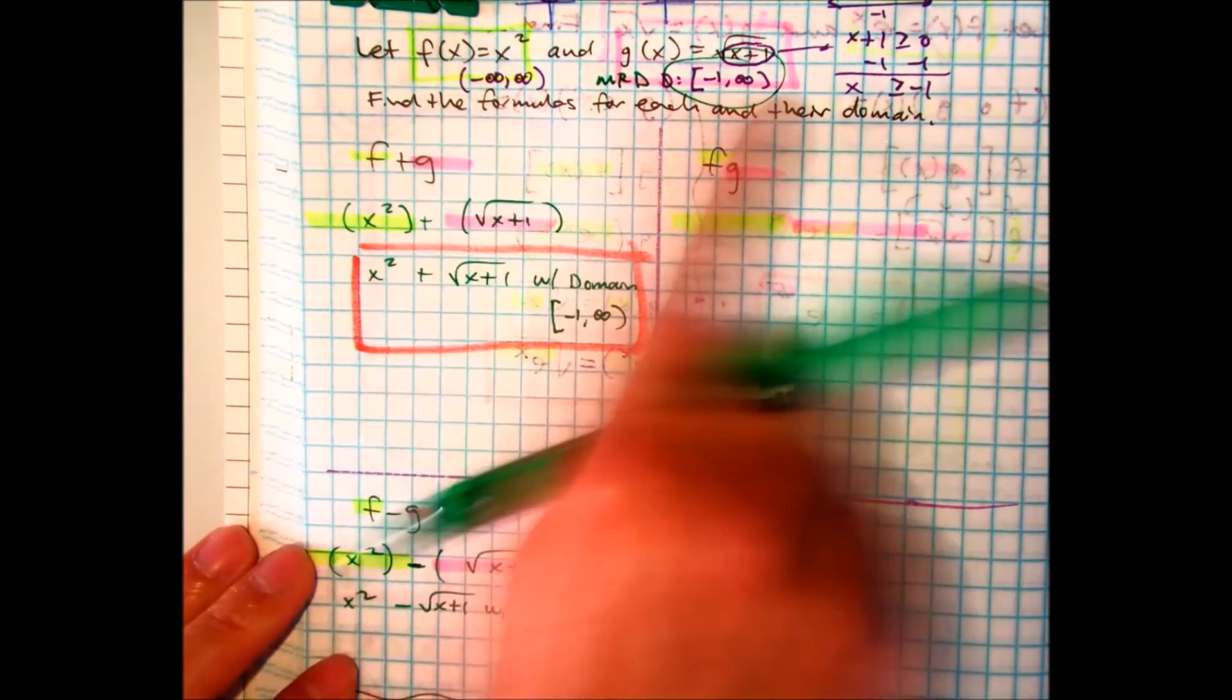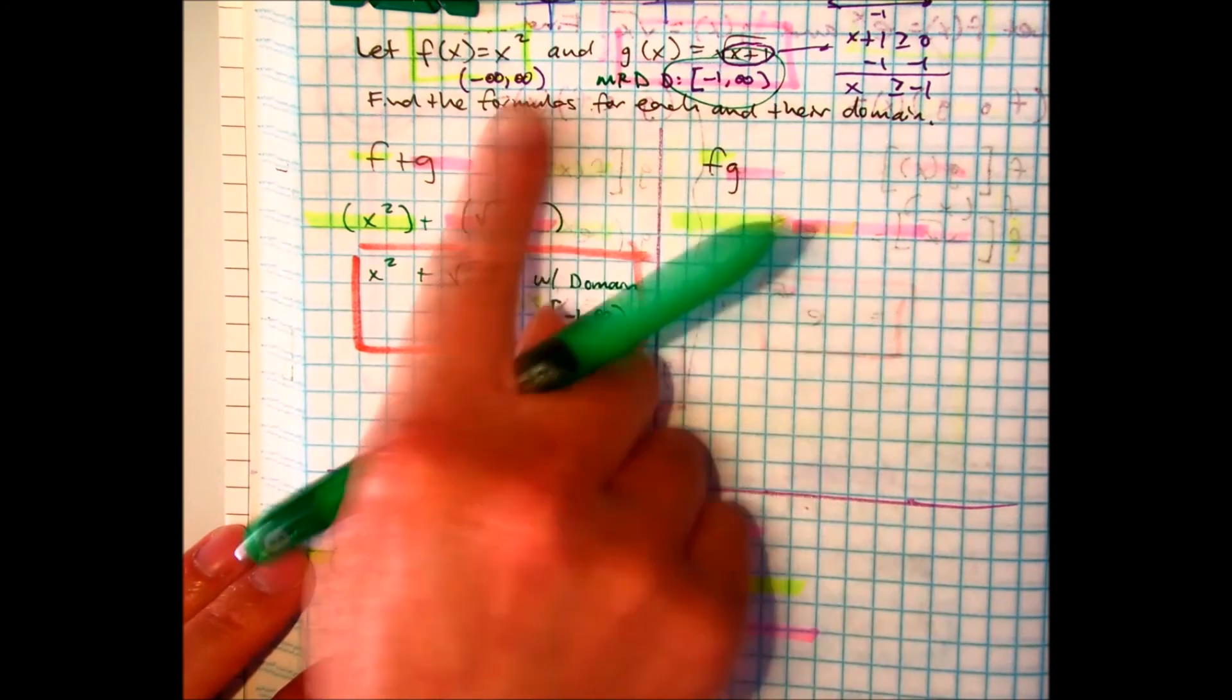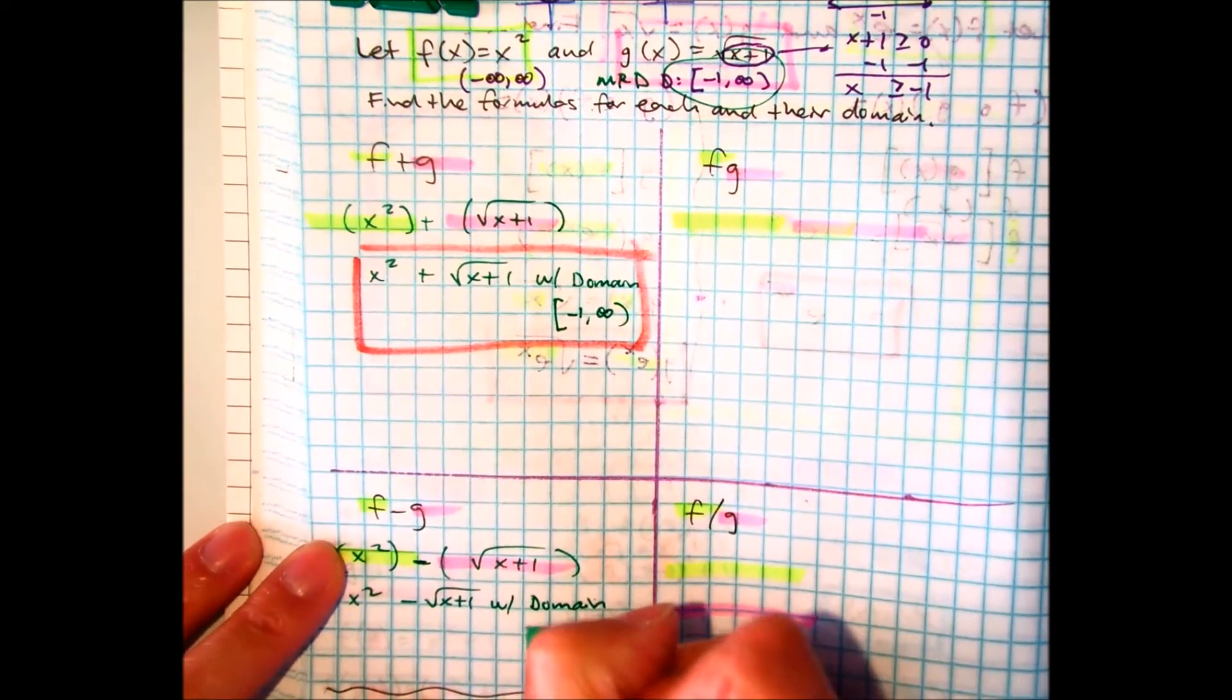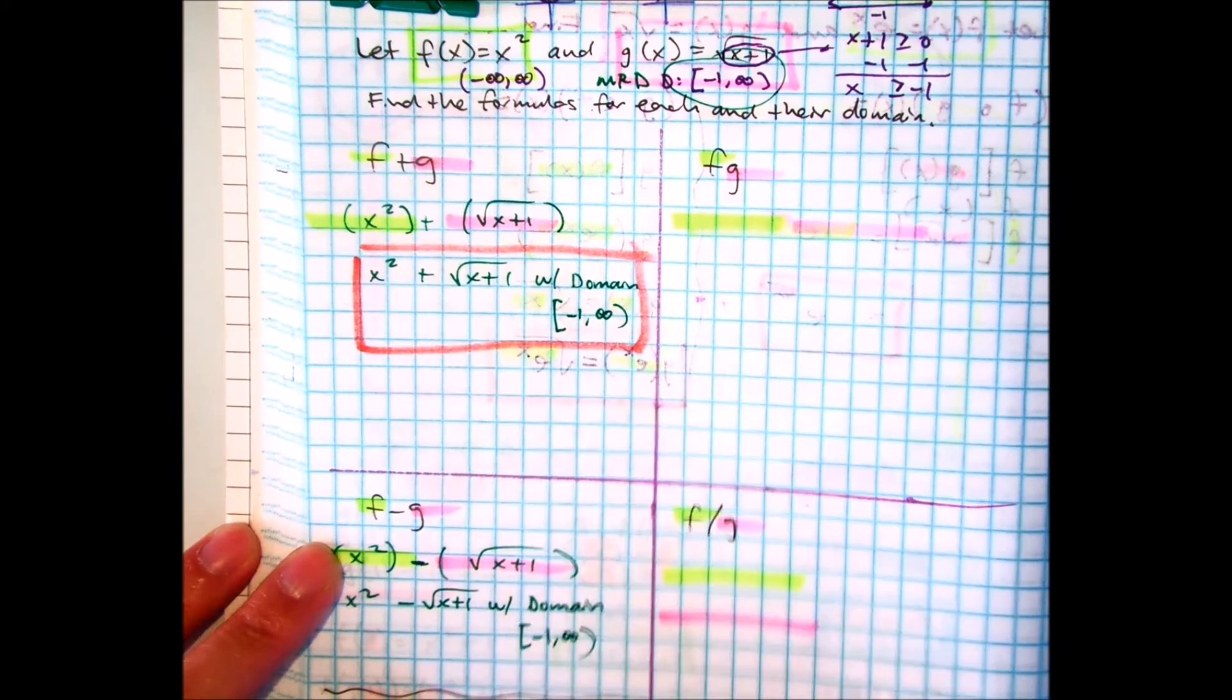And what is the most restrictive domain? Which one, class? Which one has a stricter parent? Bracket, negative 1 to infinity. And that's our answer.